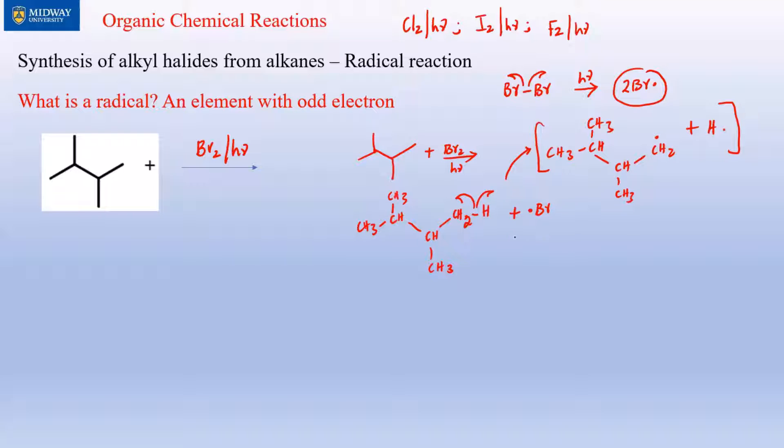Now the H radical reacts with the Br radical. Whenever a free radical reacts you write half arrows, not full arrows. When two free radicals react they produce a bond, and we have this sitting by itself.